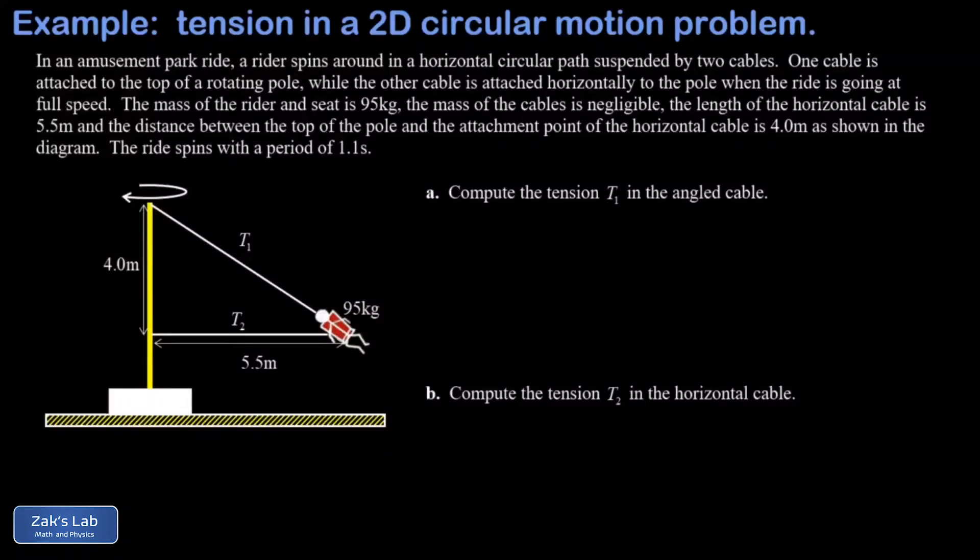In this video we're looking at an amusement park ride. A rider sits in a swing with a combined mass of the rider and swing of 95 kilograms. They're held in place by two cables as this ride spins around with a period of 1.1 seconds.